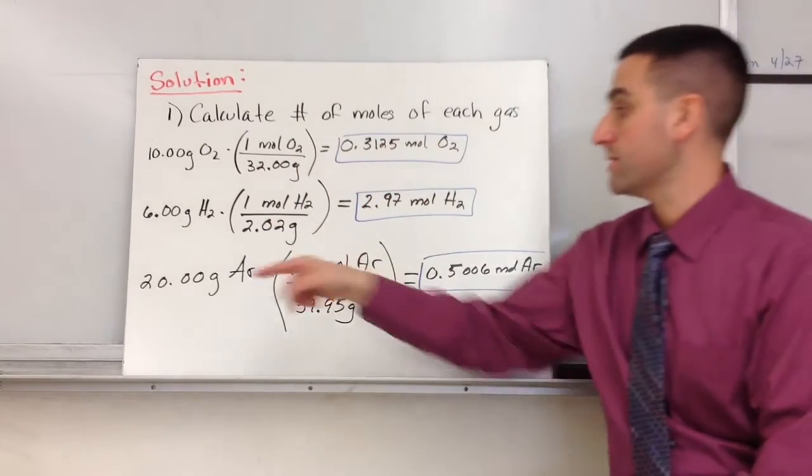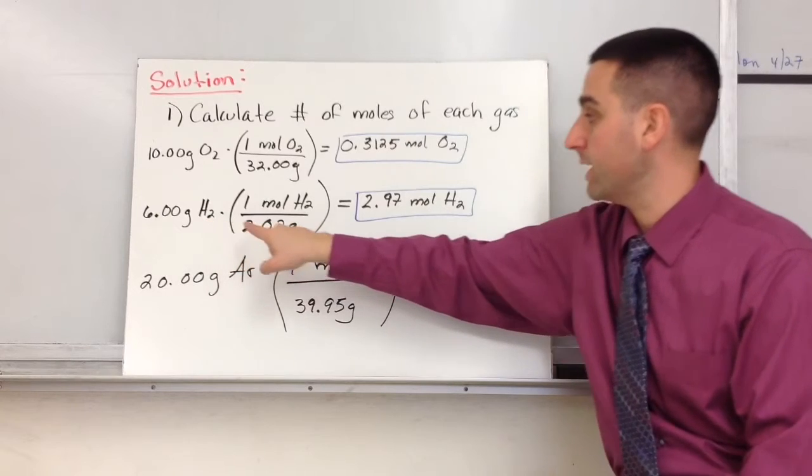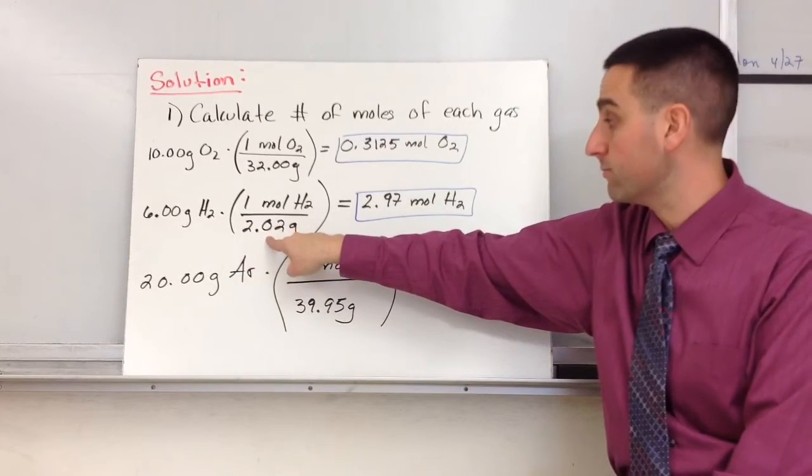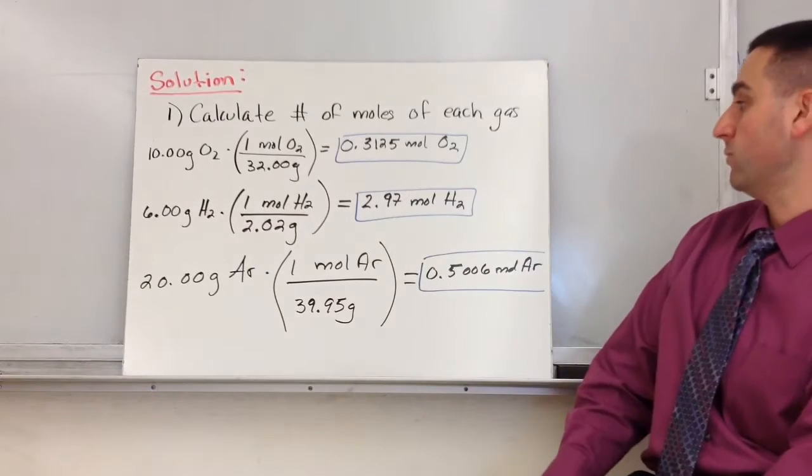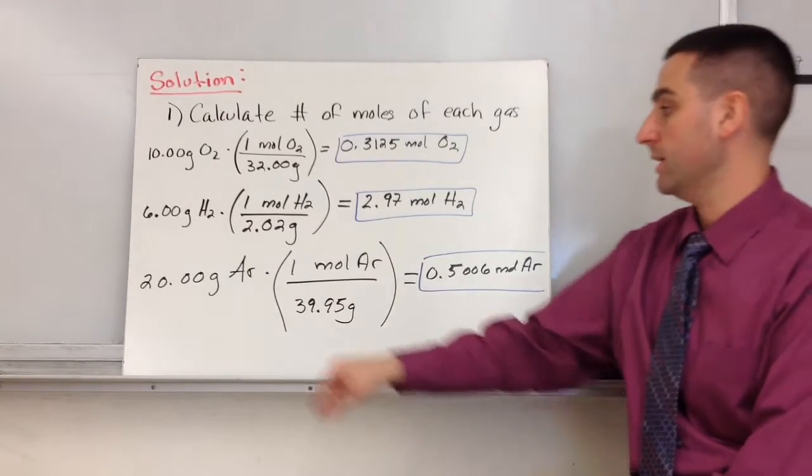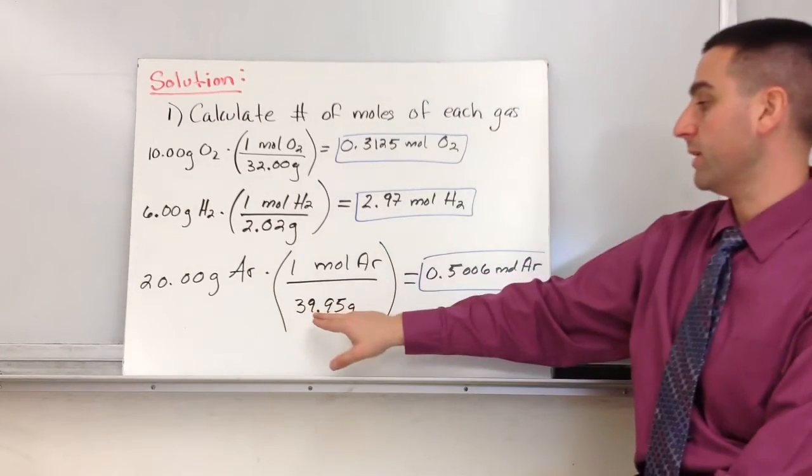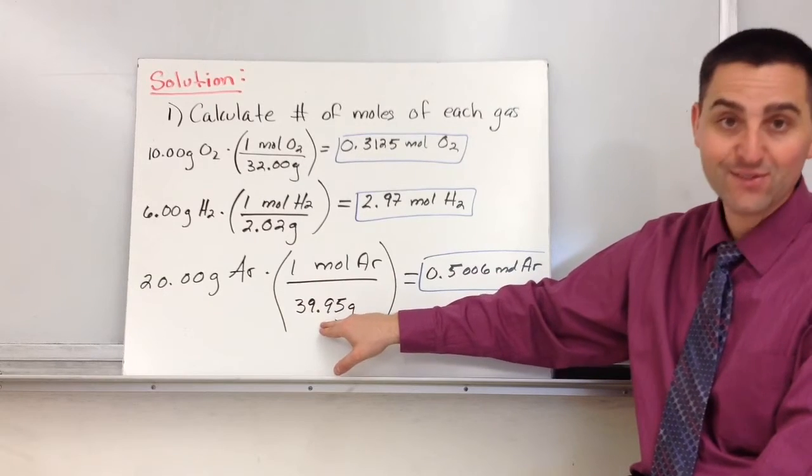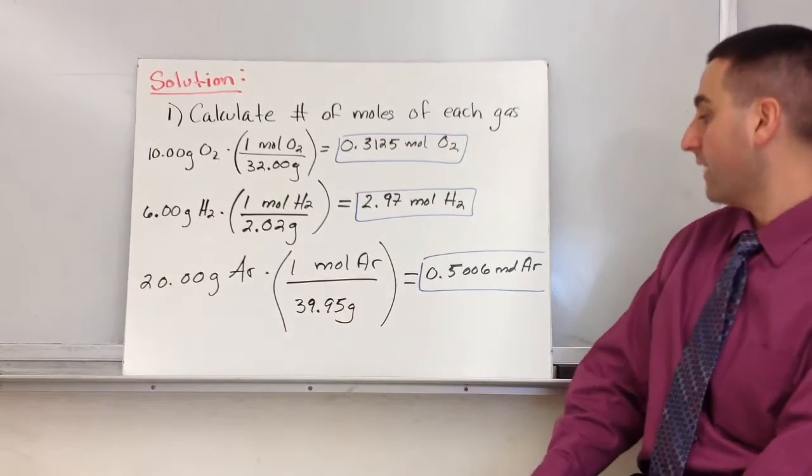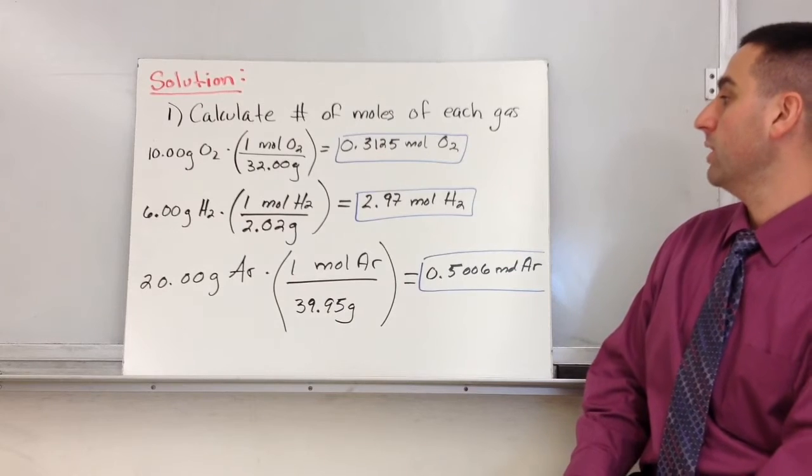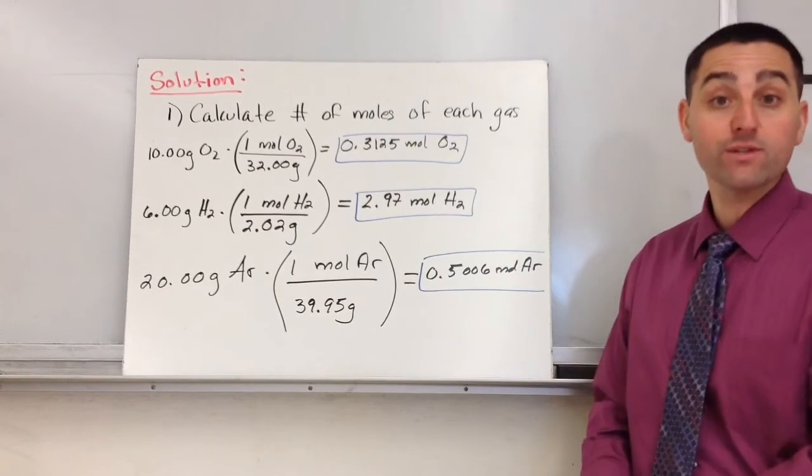6 grams of H2 gas divided by its molar mass, 2.02, gets me 2.97 moles of H2. And 20 grams of argon divided by argon's molar mass, 39.95 grams, gets me 0.5.